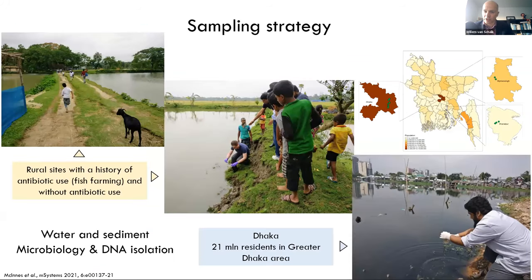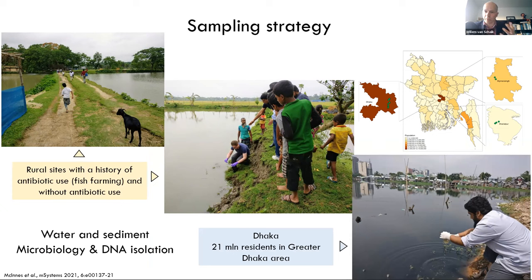We sampled different sites in Bangladesh — specifically sites in rural Bangladesh. Fish farming is incredibly important as an economic activity there, and fish is the main source of animal protein for the people of Bangladesh. We sampled water and sediment from the ponds in which fish were farmed. Some of these ponds had a history of antibiotic use by interviewing the farmers, but others did not. You can see in this picture Ross McKinnis, one of my PhD students, sampling these sites.